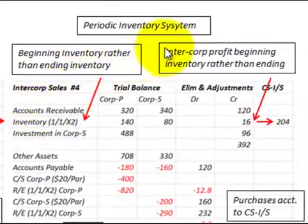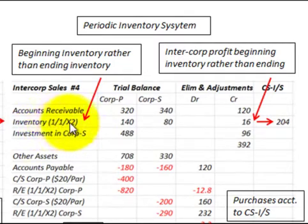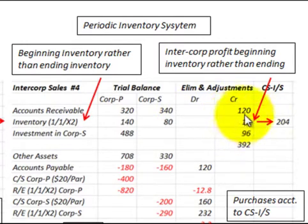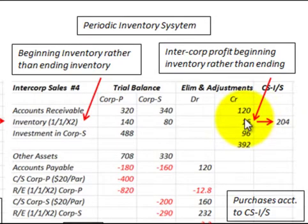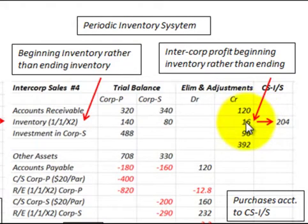Moving over to the periodic inventory system: looking at the inventory account, that's the beginning inventory of the second year, or January 1st of the second year. So we're using the beginning inventory of the year rather than the ending inventory of the previous year. Our adjustments would be based on this beginning inventory account to eliminate any intercorporate profit, whereas in the perpetual system that was based on the ending inventory of the first year.